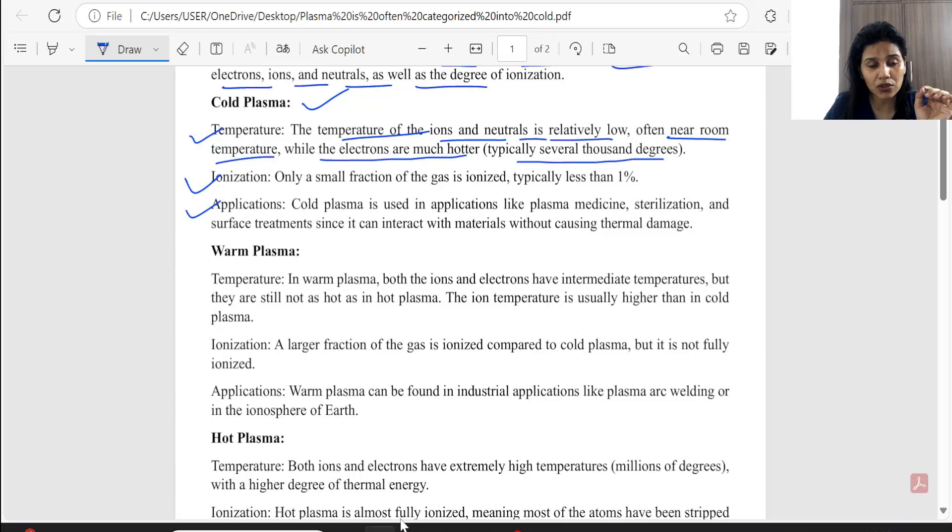How much ionization happens in cold plasma? Only a small fraction of the gas is ionized, typically less than one percent. Less than one percent, ionization is less than one percent. You will see in the application, plasma, medicine, crystallization, surface treatments, etc.